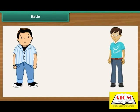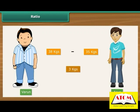We usually compare quantities and values by calculating their difference. For example, suppose the weights of two friends, Varun and Arun, are 38 kgs and 35 kgs respectively. We say that Varun is heavier than Arun by 38 minus 35, that is 3 kgs.